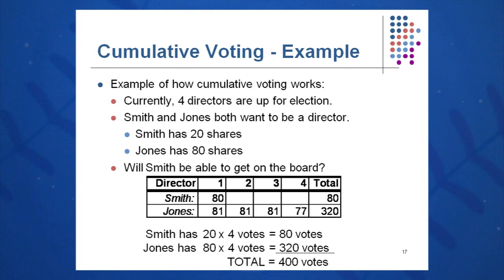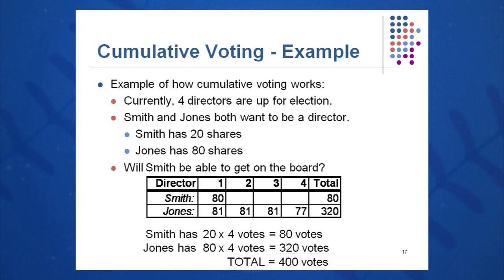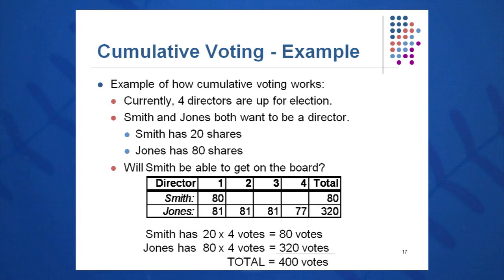Back to the original scenario: knowing that Smith has 80 votes, Jones will use 81 of his votes on every one of the positions, leaving him only 77 votes remaining. In this case, Smith would win a seat on the board 80 to 77. However, there could be a four-way tie if Jones splits his 320 votes evenly — 80 each — across all four directors. But to guarantee a win, you need 81 votes, and that's what this calculation gives you.